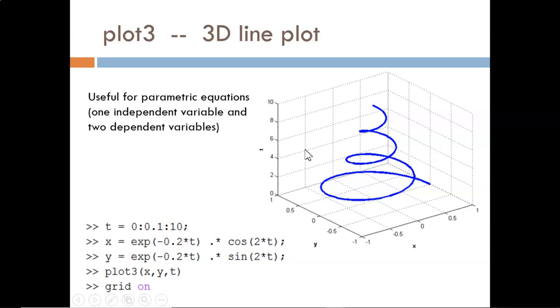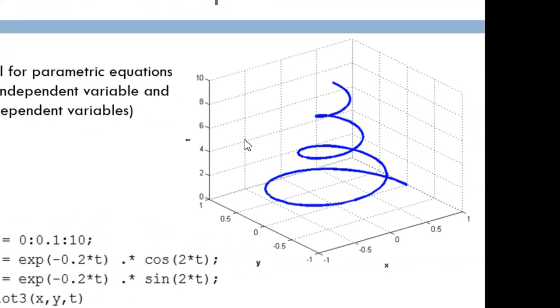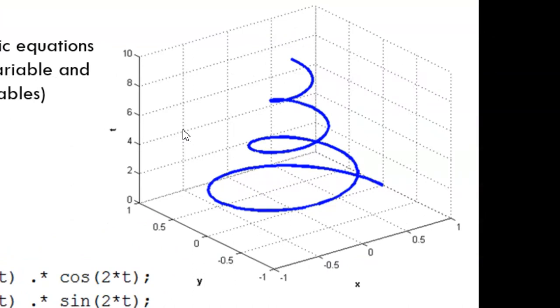One possible interpretation of this particular plot is the vibrations of a spring. T represents time since you flicked the spring. X and Y represent the horizontal and vertical positions of the end of the spring as it vibrates.